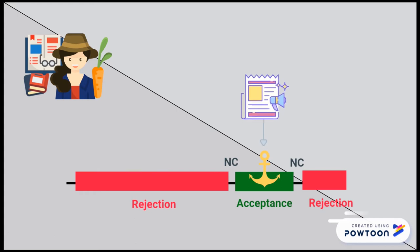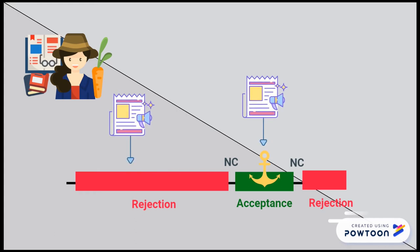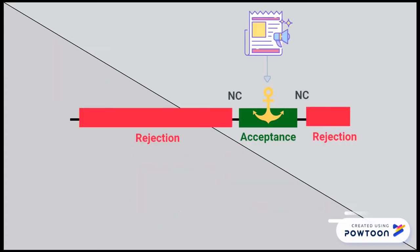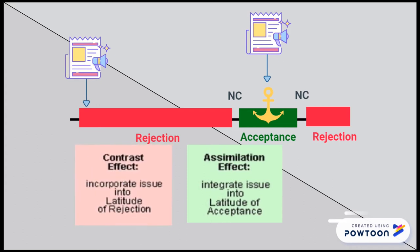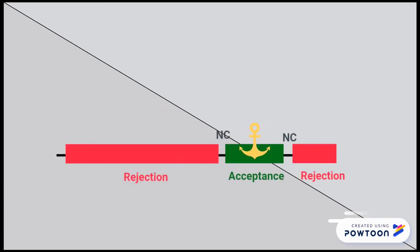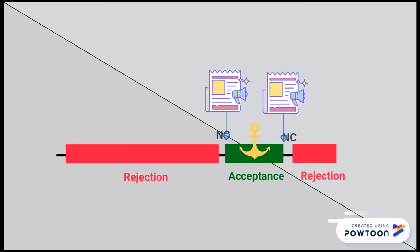When the message falls near the anchor point, the assimilation effect occurs — the individual has already believed the message, and repeating it again will not cause persuasion. Conversely, if the message is too far away from the anchor point, a contrast effect will occur and the message tends to be directly denied. Therefore, when trying to convey a persuasive message, the most effective message sits between latitudes of acceptance and noncommitment, as messages in this interval can change people's attitudes toward issues and achieve the goal of persuasion.